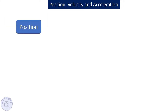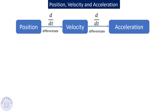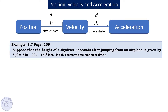The application in physics: if you have the position function and differentiate it, you get velocity — velocity is the rate of change of position with respect to time. Differentiating velocity gives acceleration, which is the rate of change of velocity.